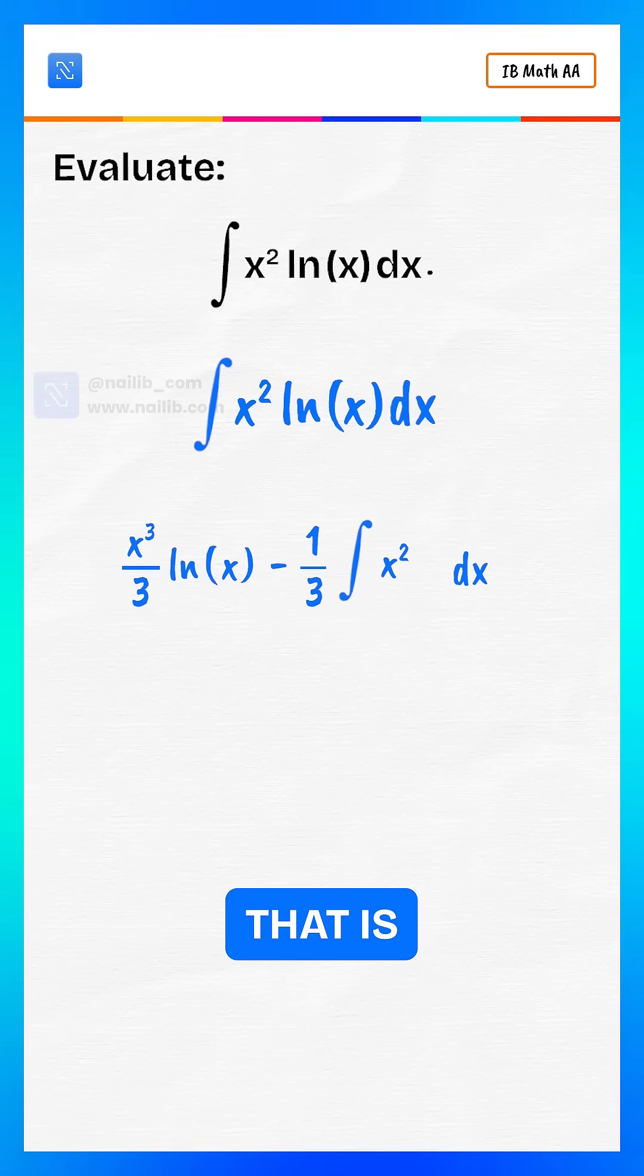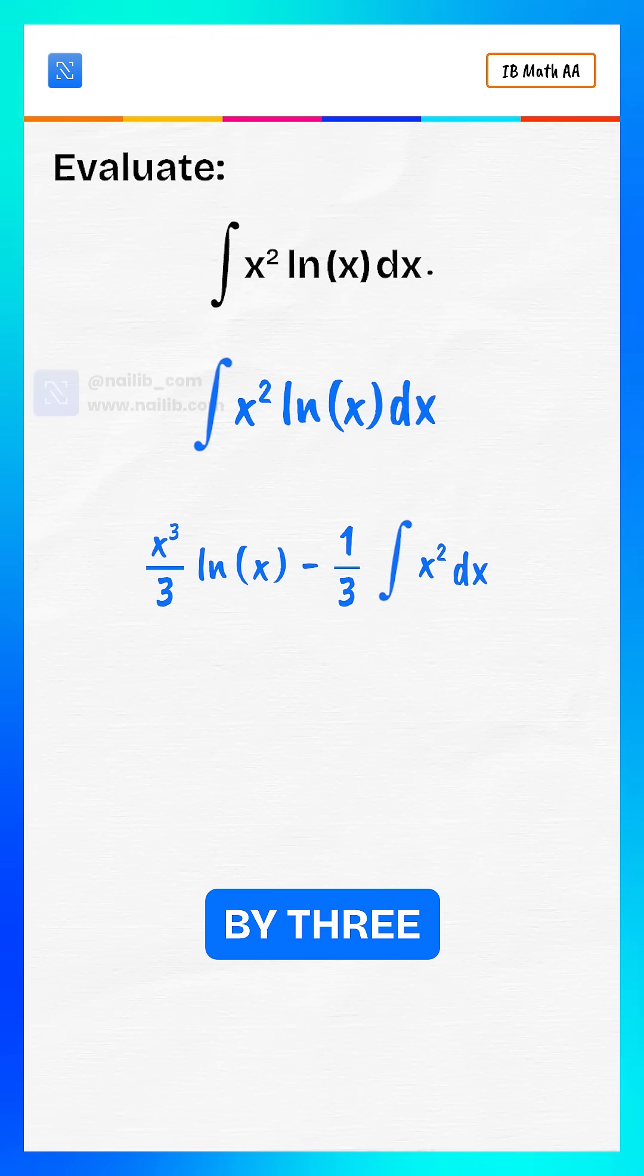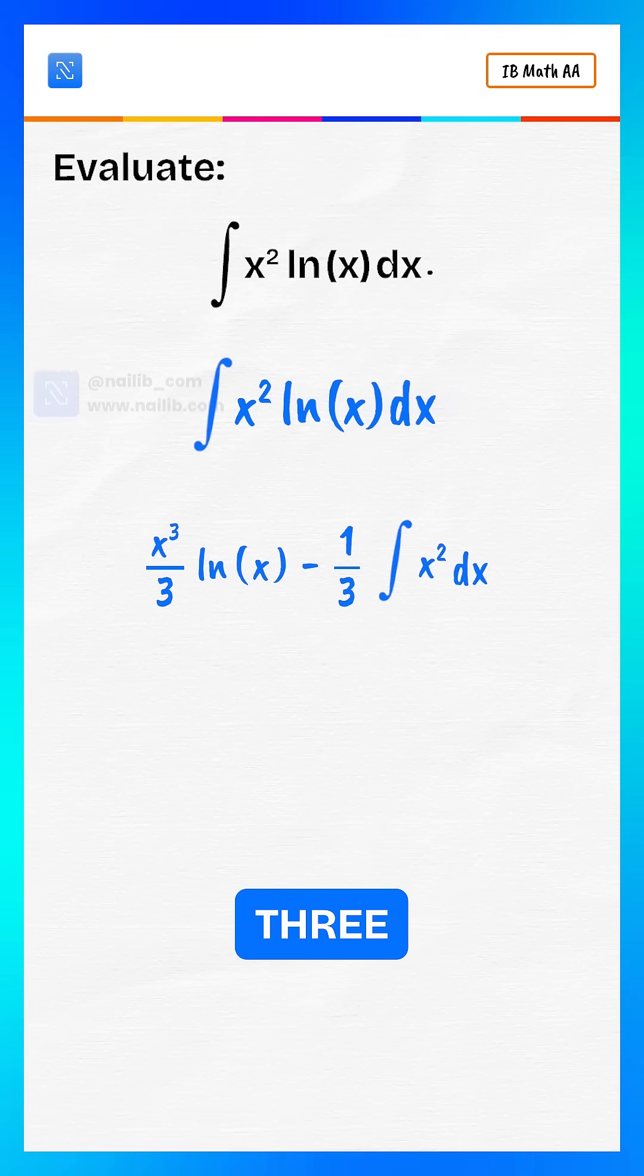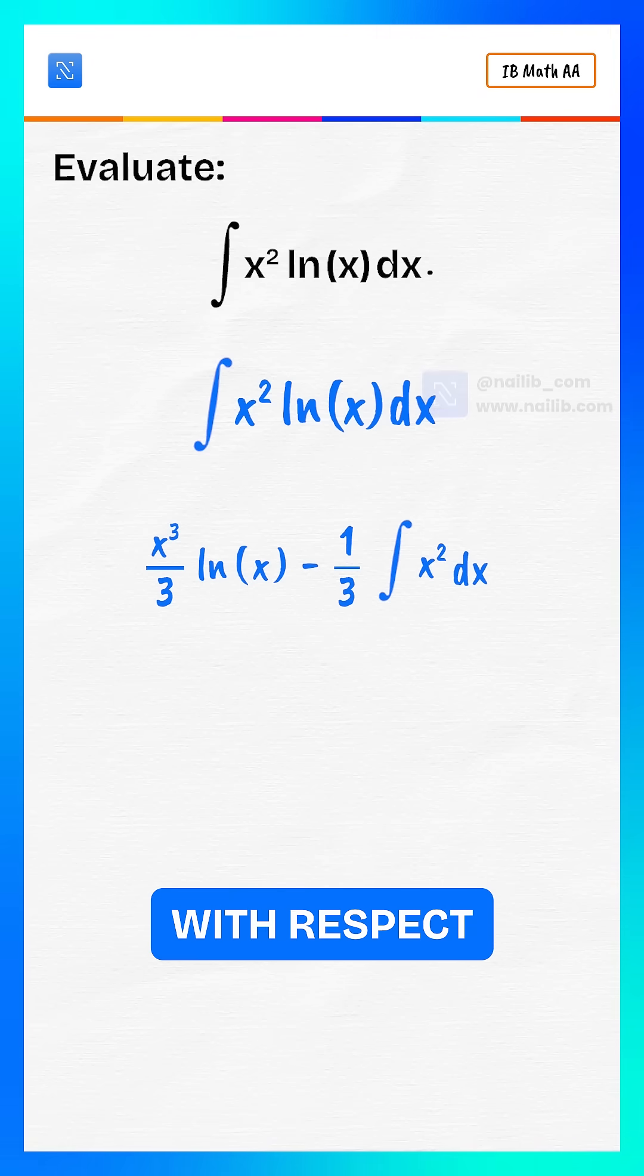Simplify the integral. That is x cubed divided by 3 multiply by log of x minus 1 over 3 integral of x squared with respect to x.